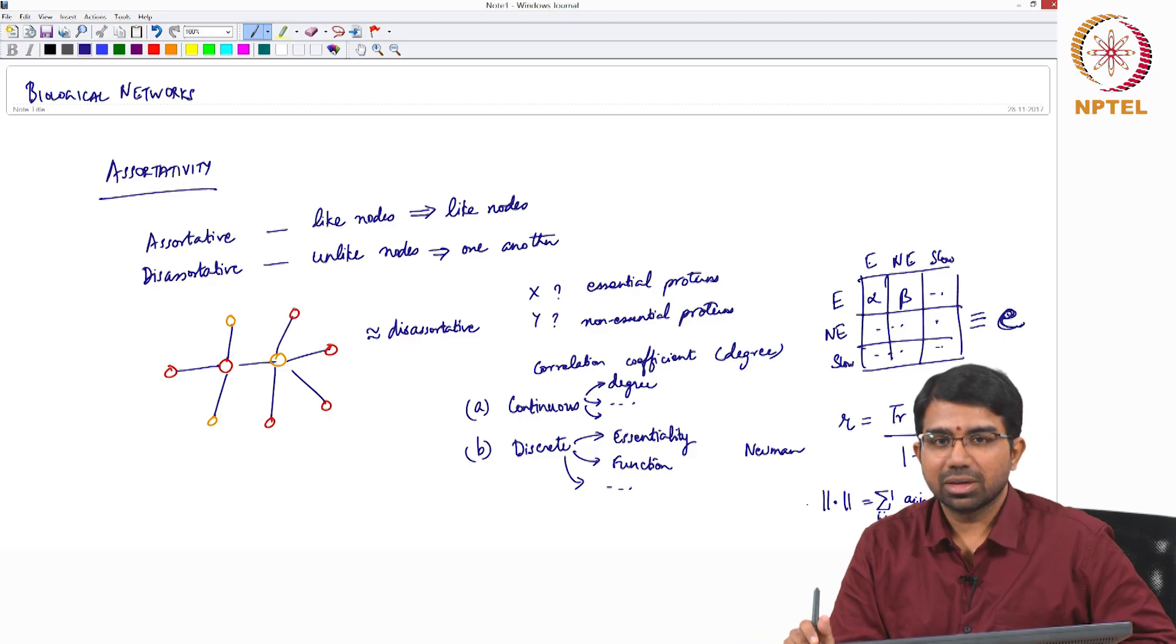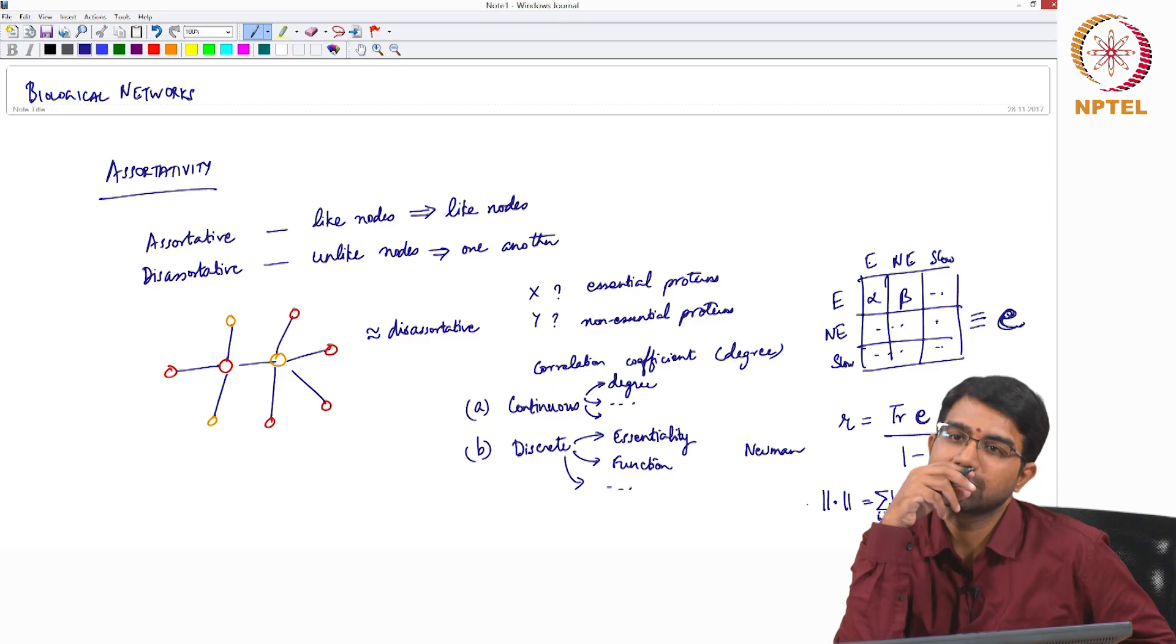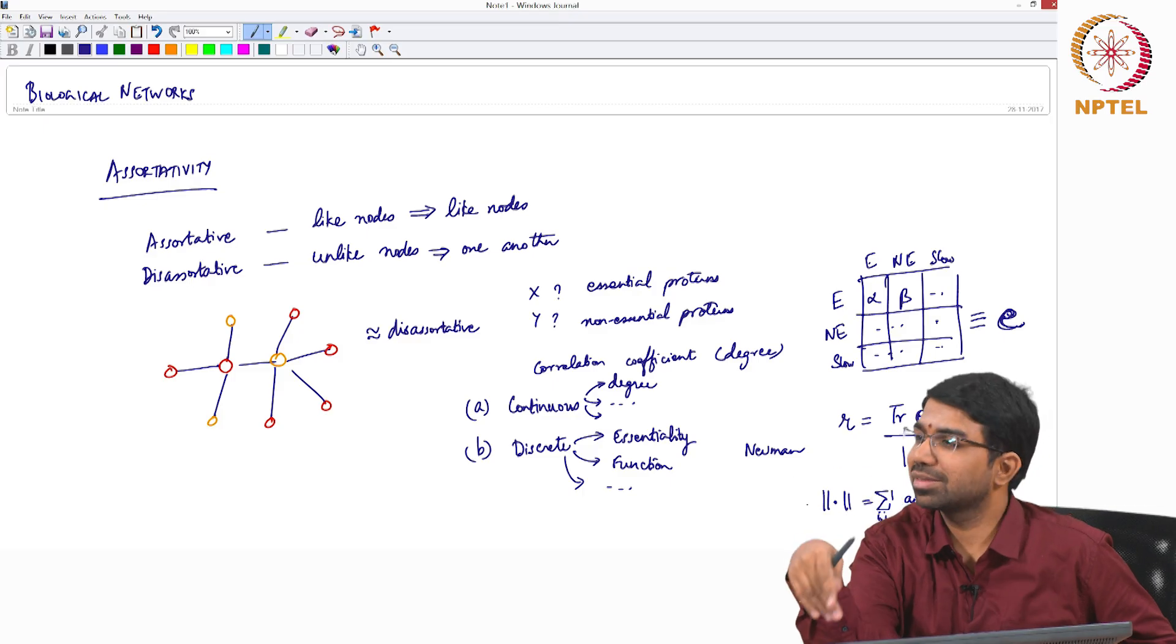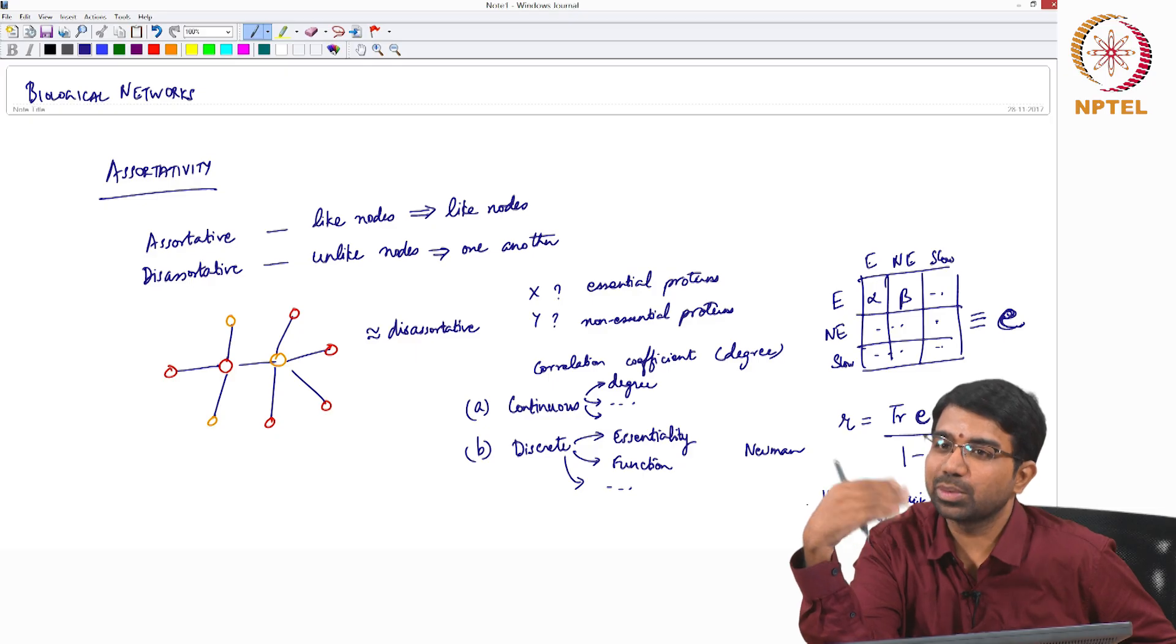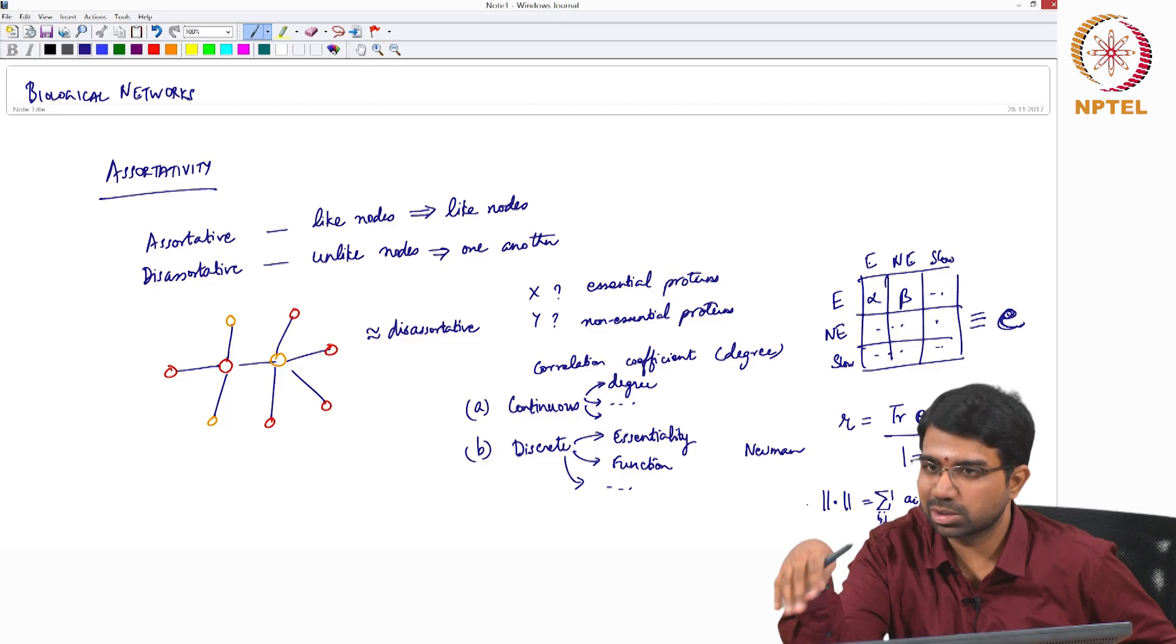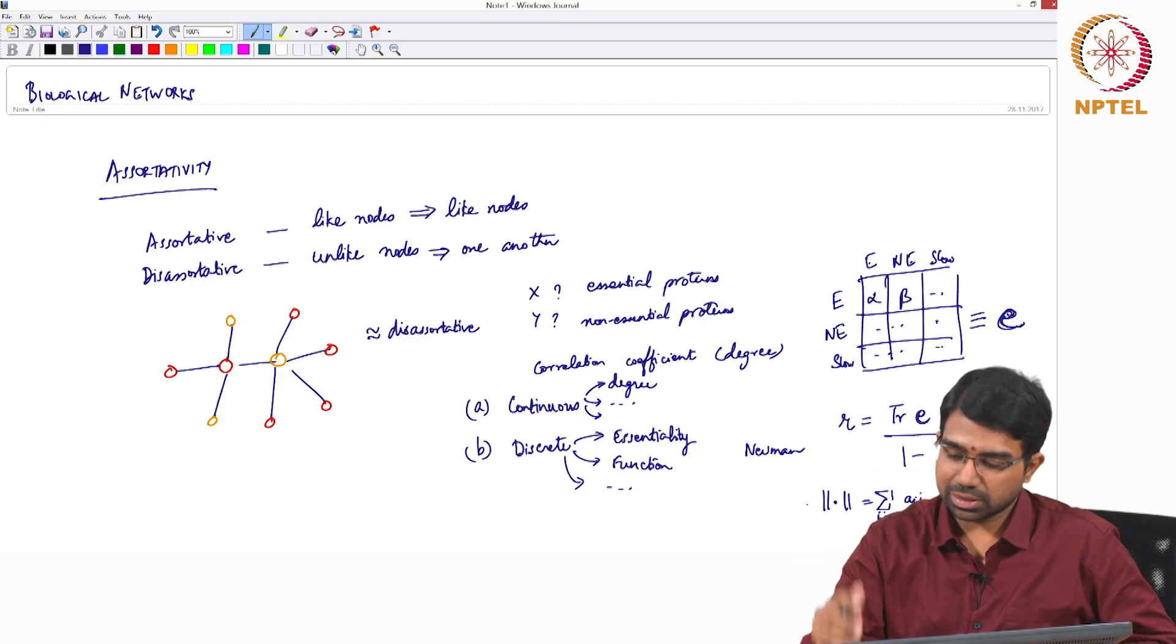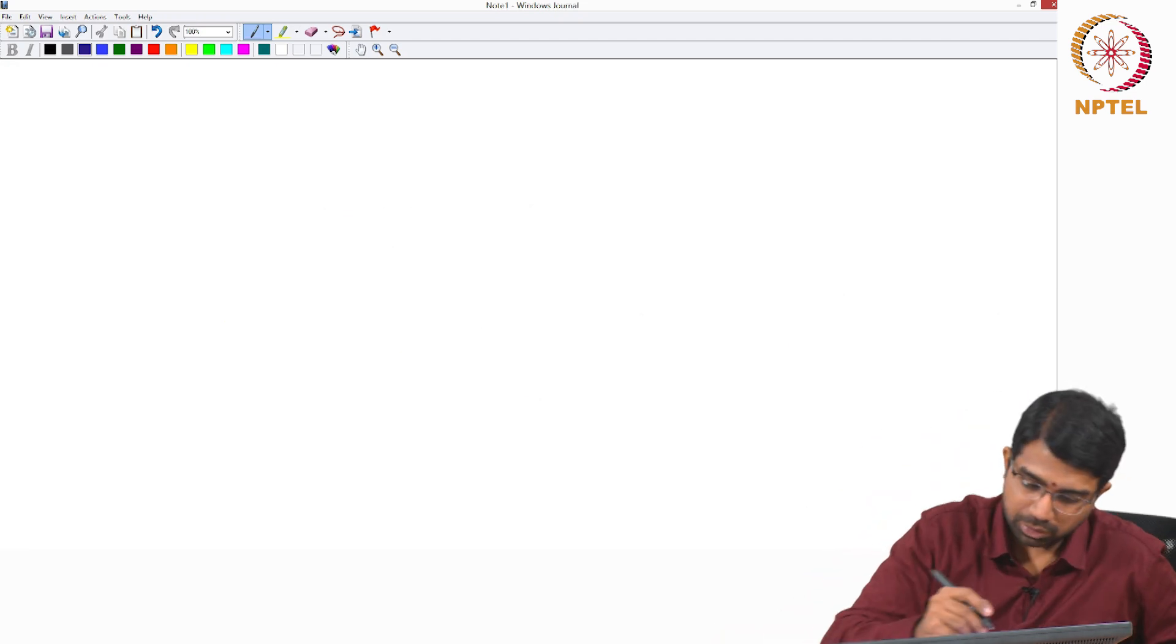So this is the discrete case. What happens in the continuous case? Would you be able to apply this? Well, yes, you make a couple of bins, make it discrete and apply this. So you say anything greater than 20 links is high degree, anything less than 5 links is low degree, other things are intermediate degree. So high, low, intermediate, you make 3 classes, make this matrix and you can do some calculations like this.